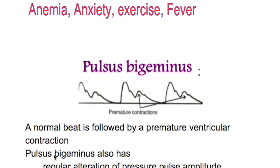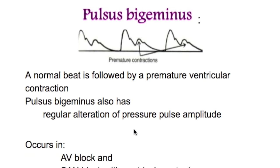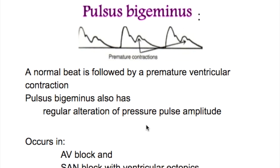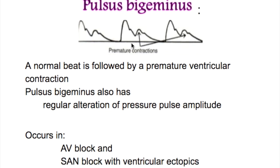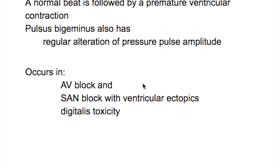Pulsus bigeminus: a normal beat is followed by a premature ventricular contraction, with regular alternation of pressure pulse amplitude. Causes of pulsus bigeminus include AV block, sinoatrial block with ventricular ectopics, and digitalis toxicity.